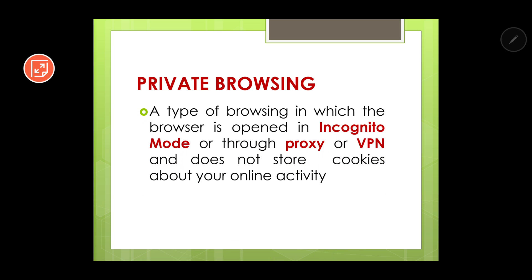Next, let's move to private browsing. 'Private' means personal — if you do not want to disclose your identity and various other things, you can do private browsing. It is a type of browsing in which the browser is opened in incognito mode, or through proxy or VPN, and does not store cookies about your online activity. In the previous part, we saw that one of the ways websites track us is through cookies, and private browsing prevents that.